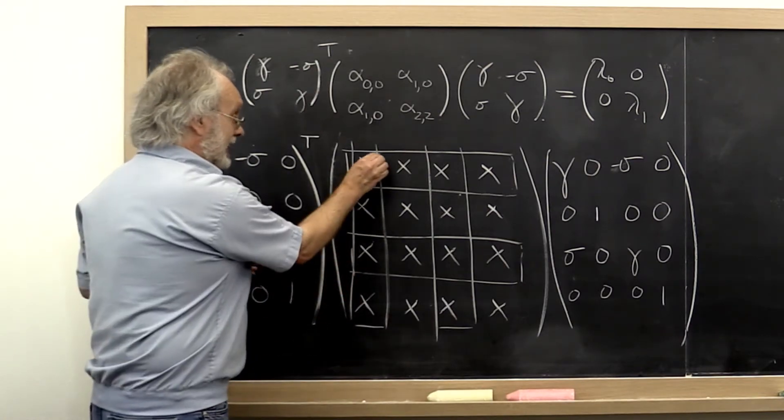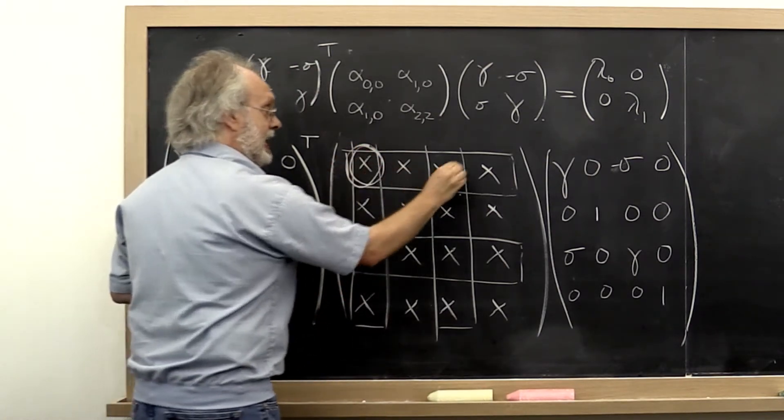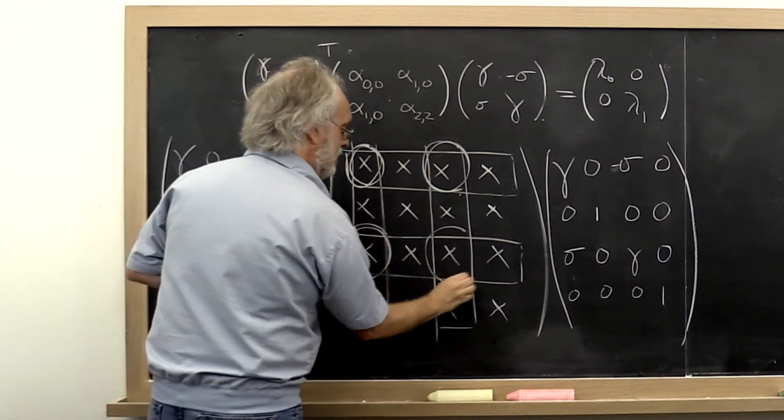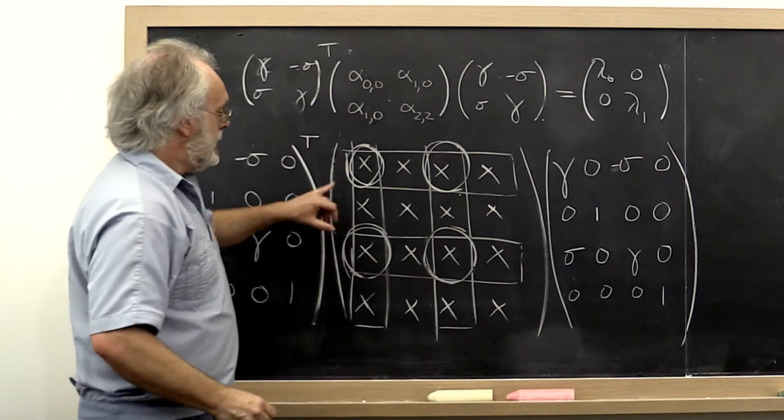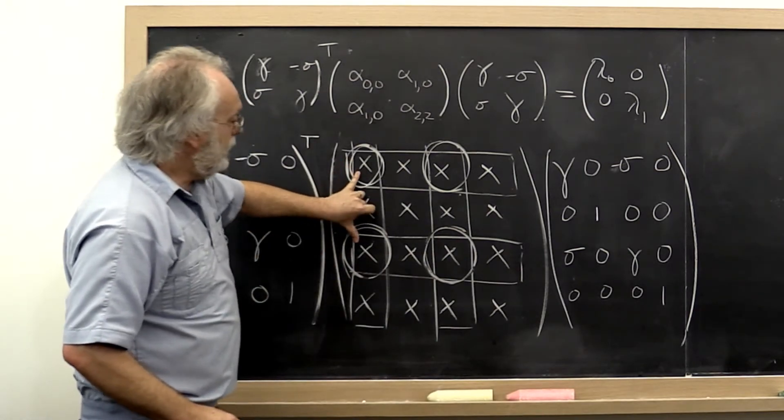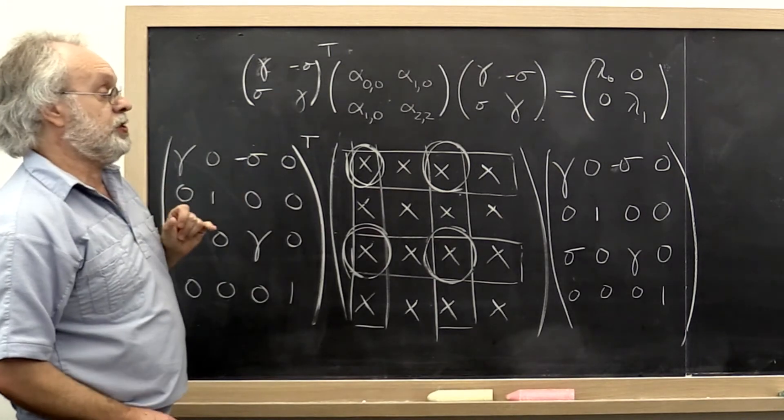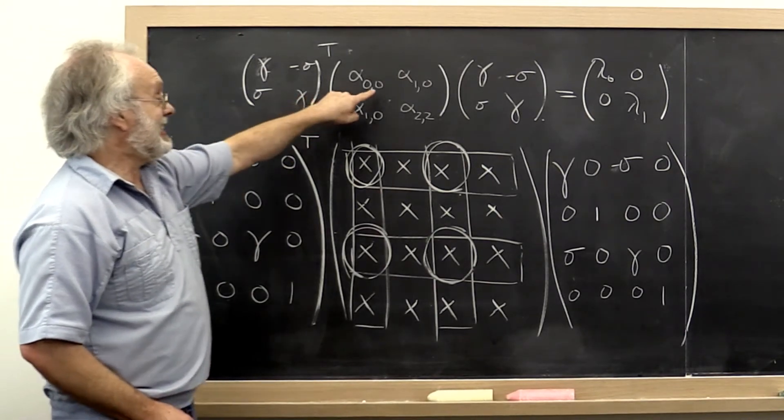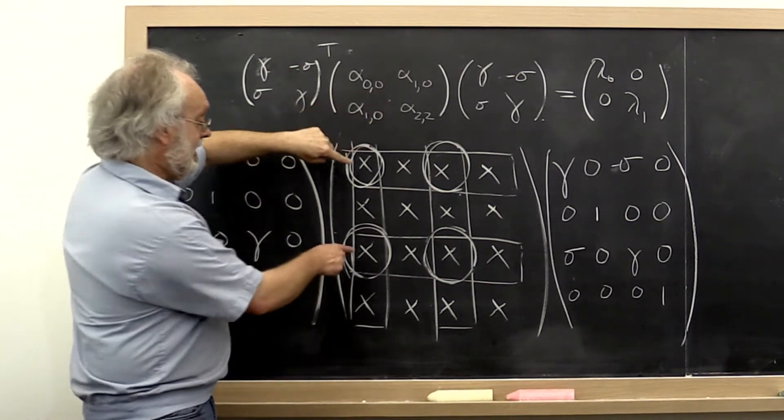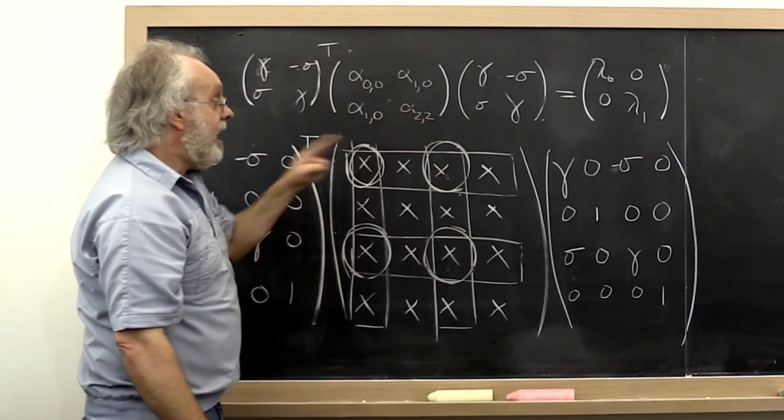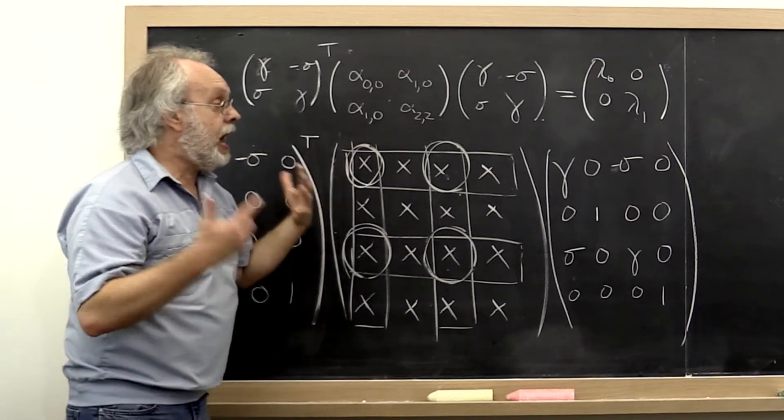Now if you look at these matrices, these entries right here, how these entries are affected by the actual Jacobi rotation that's embedded here, is exactly this way. So if you take these entries and you move them into this matrix, then you immediately see,